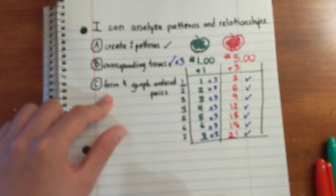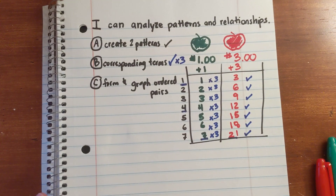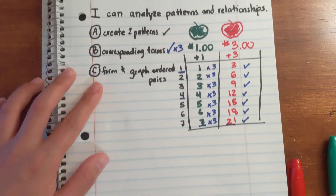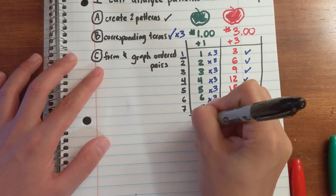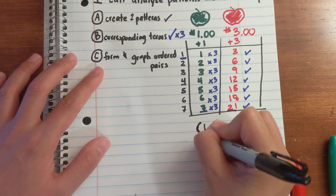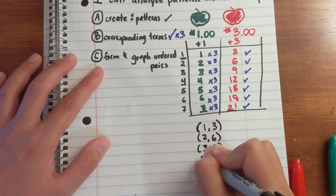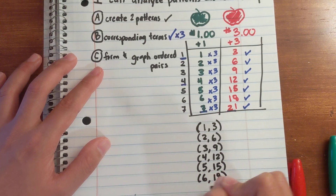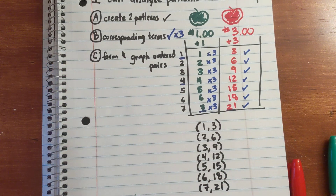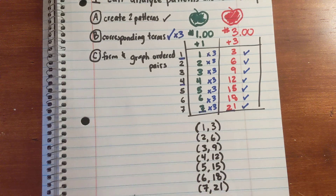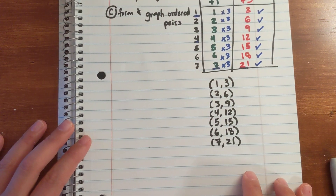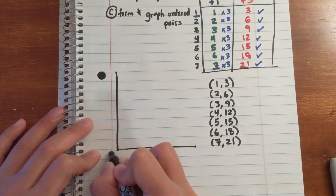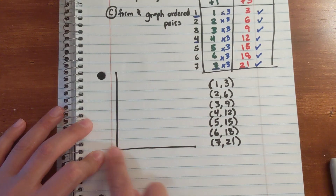The final thing to do is to form and graph ordered pairs. This is probably the easiest part because you already have all your ordered pairs: (1,3), (2,6), (3,9), (4,12), (5,15). Usually three or four terms are enough to find a working relationship, but we have a few extra for more practice. Now we need to graph them. In fifth grade we only worry about the first quadrant — the positive integers. We start at the origin, and since our maximum is twenty-one and seven, we'll scale accordingly.